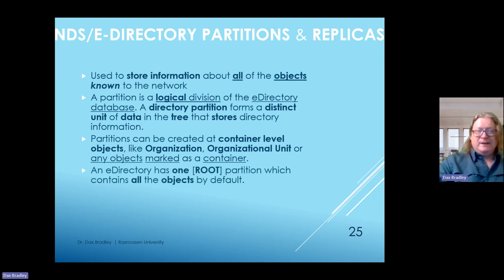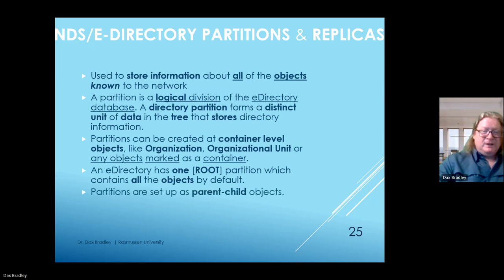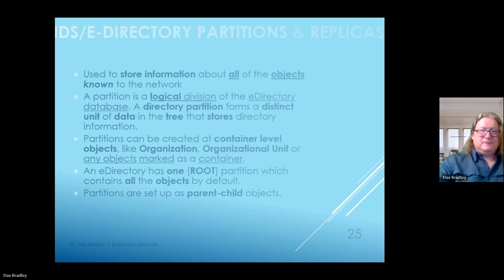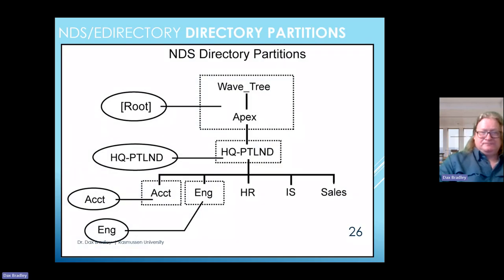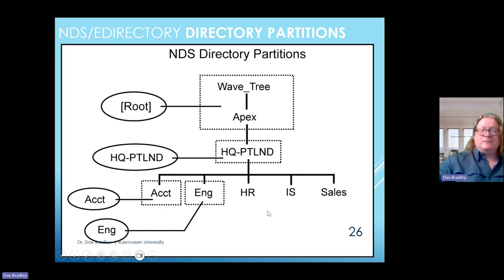The directory partition forms a distinct unit of data in the tree that stores directory information. An eDirectory has one root partition which contains all objects by default, and partitions are set up as parent-child objects. NDS directory partitions include the root from the apex, and from each branch different nodes operate independently as silos but are all together on the same network.